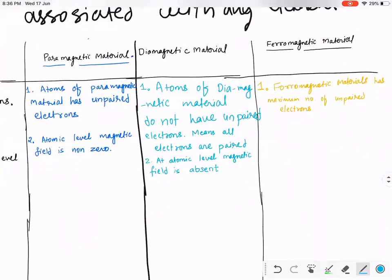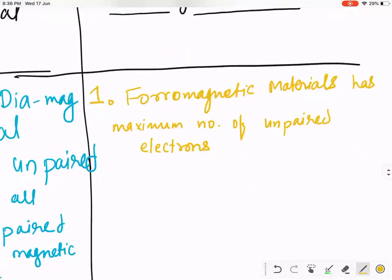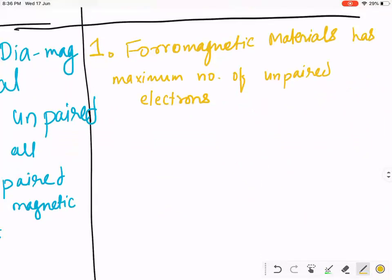Because paired electrons cancel each other's magnetic field — they create magnetic fields in opposite directions. Now, for ferromagnetic substance: will it produce a magnetic field at the atomic level?